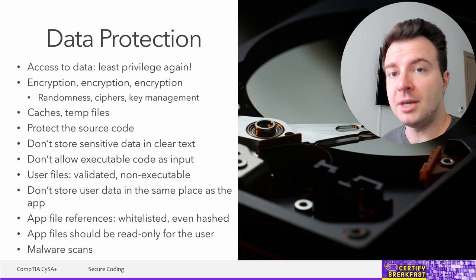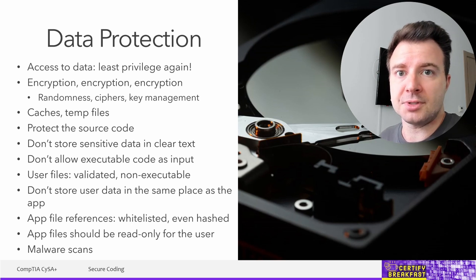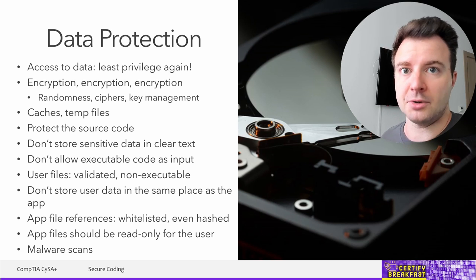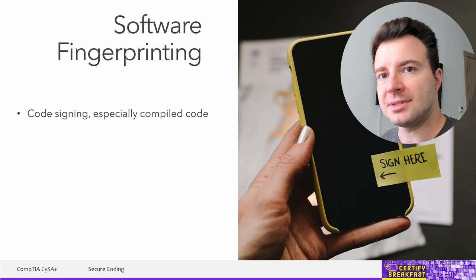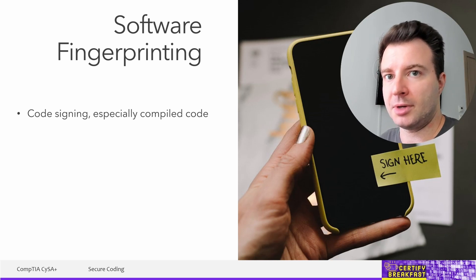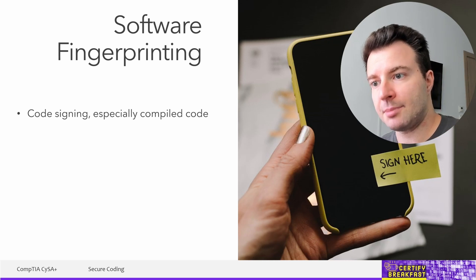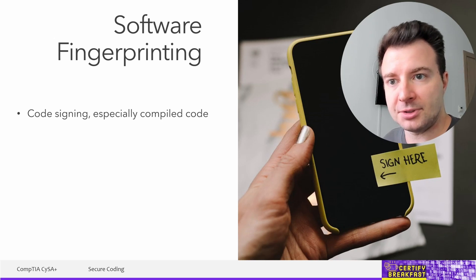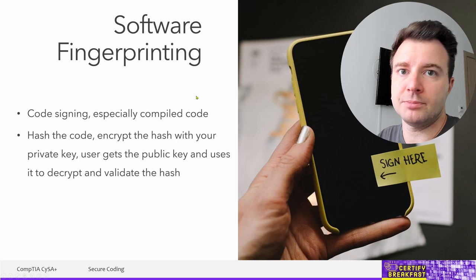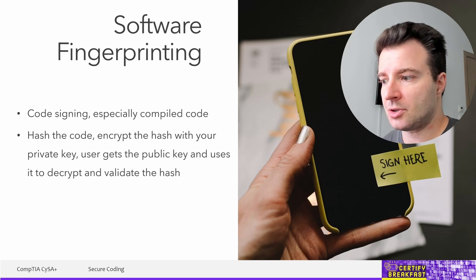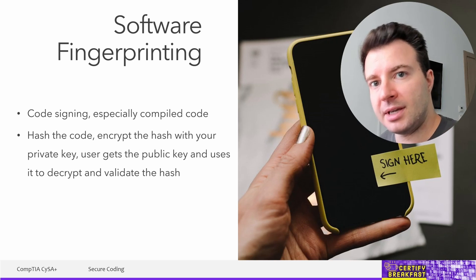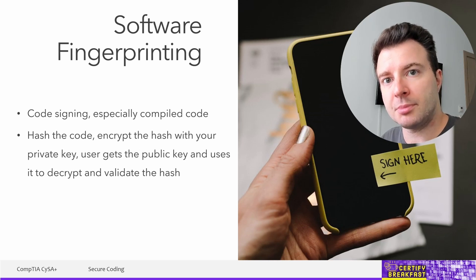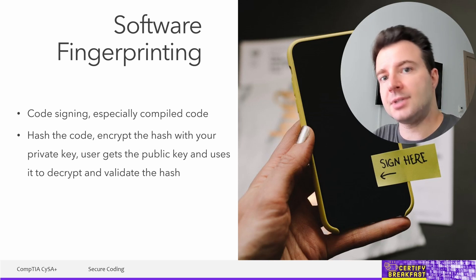Run malware scans from time to time on the server hosting your web app and on the server hosting user-uploaded content. We also need to talk about software fingerprinting, which is basically code signing. You publish a compiled application and sign it so that whoever downloads it can validate that it comes from a trusted source. You use digital signatures — take the executable code, hash it, then encrypt that hash with your private key as the developer. The user downloads the application and uses the public key to decrypt the signature and compare the hash.